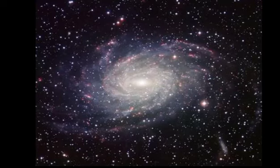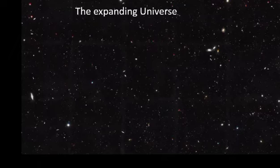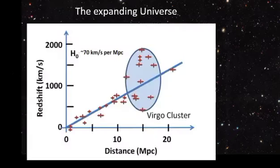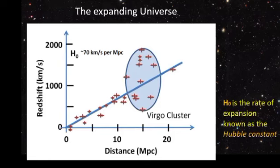I will discuss the expanding universe. According to the research, this is the unit of the expanding universe that has redshift in kilometers per second and the distance. We have H₀, which is the rate of expansion known as the Hubble constant. As you can see there, the Virgo Cluster, and now we discuss the white particles, which is the Milky Way, expanding or moving away.